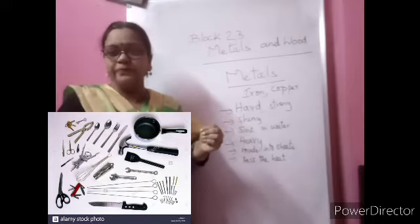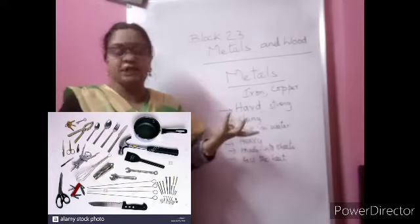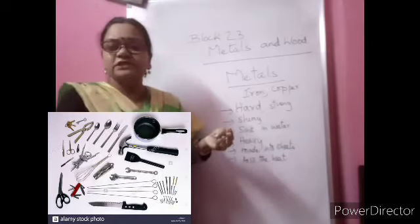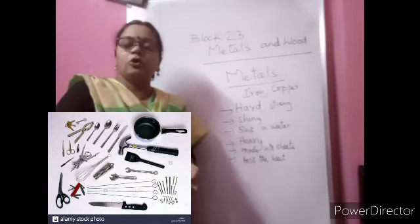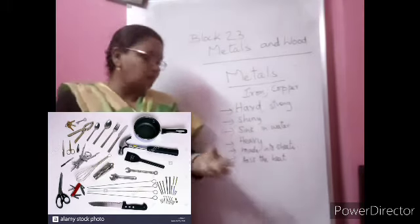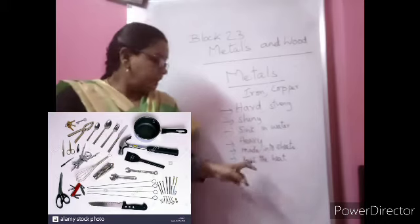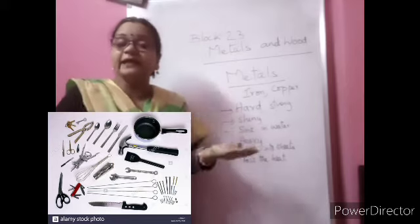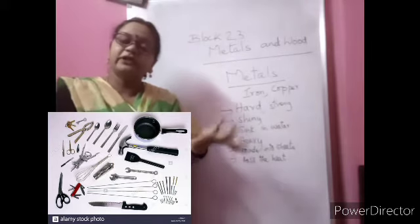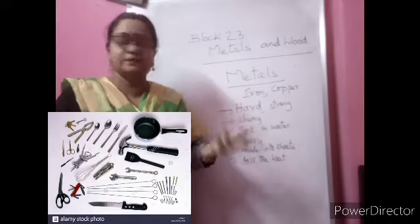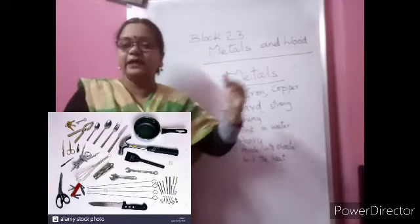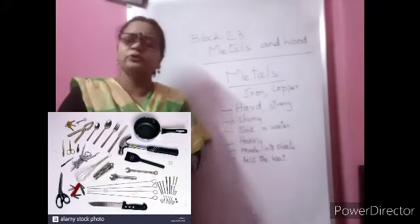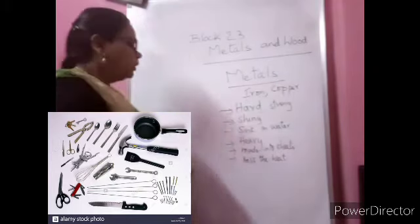So these are the five properties of metal that all must know: they are hard and strong, most of them are shiny, they will sink in water because they are heavy, they can be made into thin sheets even though they are strong by heating, and they can pass heat — that is, they conduct heat. This helps them be useful in many ways.